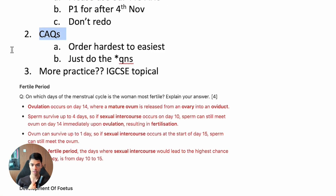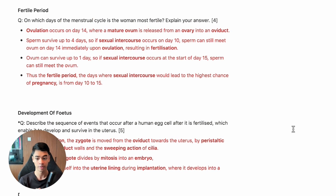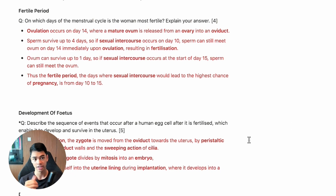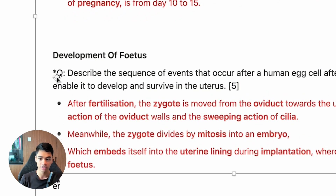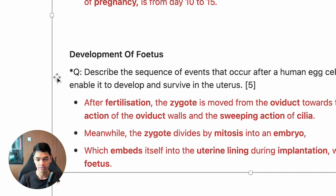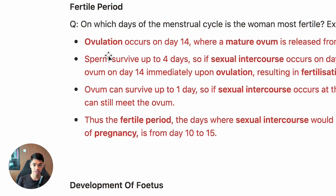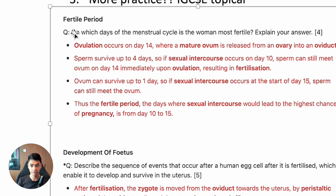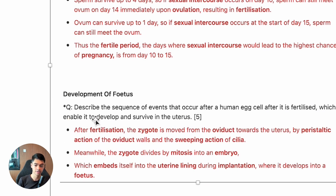Also, just do the asterisk questions. I thought about this from a student's perspective — near O-Levels you might feel overwhelmed by how many CAQs there are. So I put asterisks on the truly common ones. If you had to sacrifice other questions, don't sacrifice these. For non-asterisk questions, you can just read the question, think of what you'd answer, then read the answer — study it but don't write it out. That saves time. But for asterisk questions, definitely write them out fully.